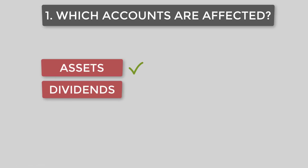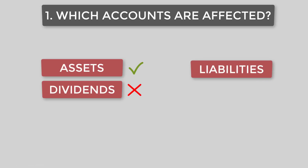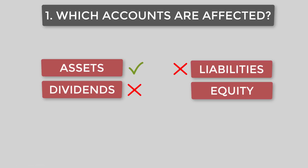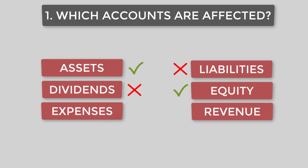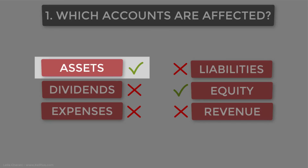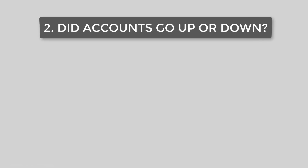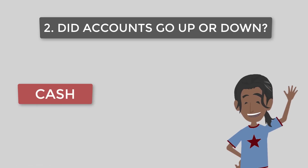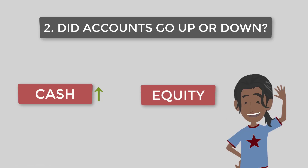Dividends — that's a distribution of profits to the owners — doesn't happen here. Liabilities — that's something we owe to others — at this point Claudio doesn't owe anything to anyone, so liabilities aren't affected. Equity is money owners paid into the company, or profits generated that were not distributed to owners. Claudio put in his own money into the business, so we know equity is affected. Revenue and expenses are accounts in the income statement — he didn't earn anything or incur any expenses at this point. So this transaction will affect only assets and equity. Did accounts go up or down? Claudio put cash into the business, so the cash account increases, and by putting money into the company, equity increases as well.